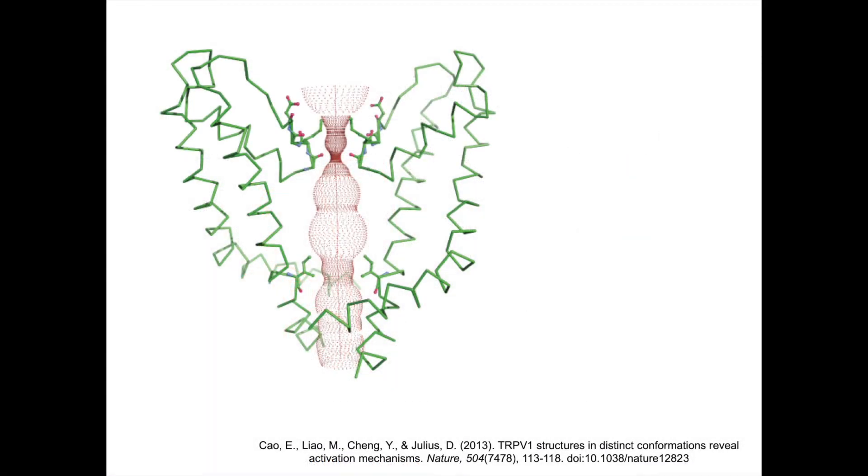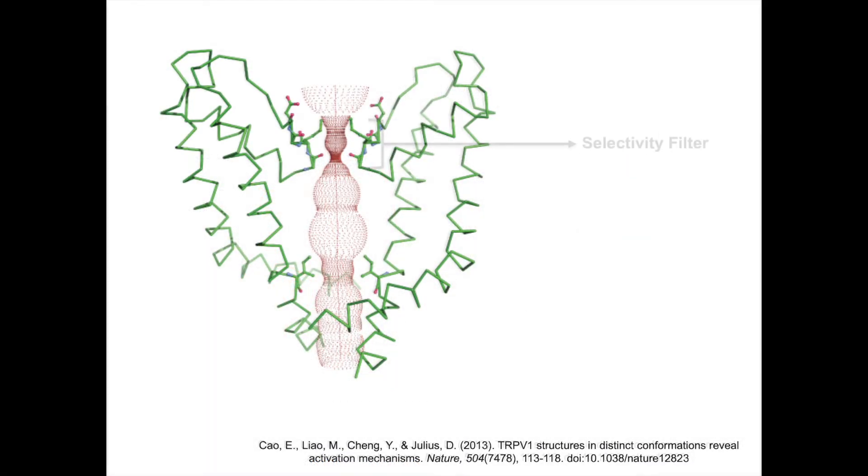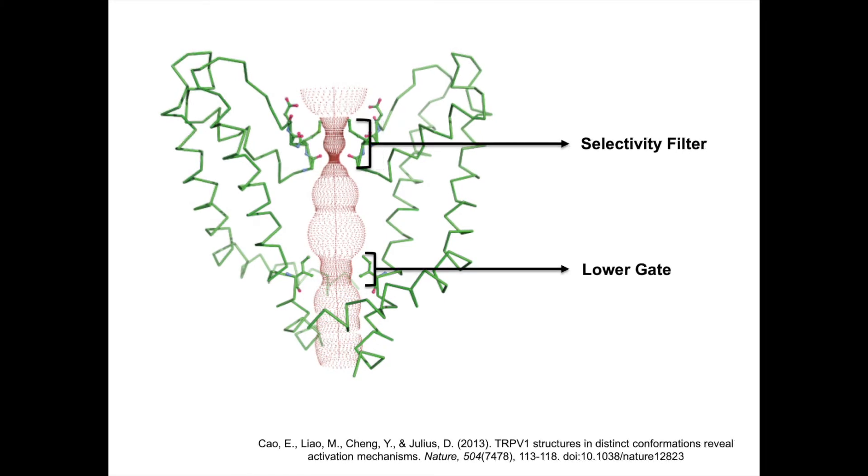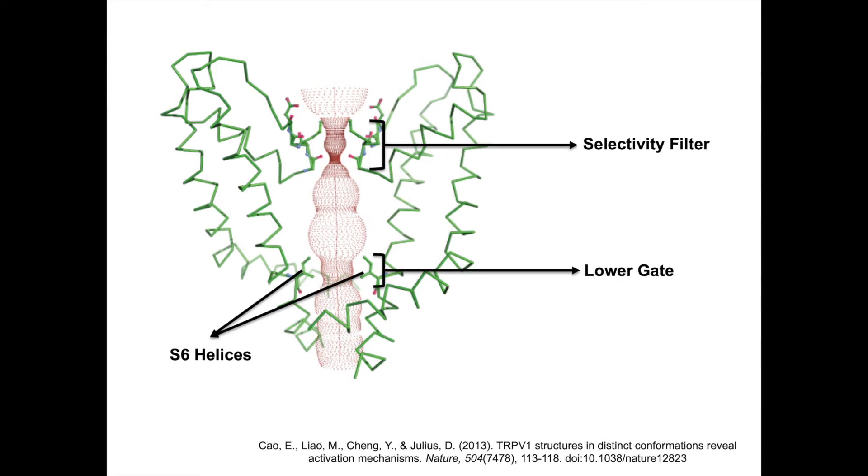The TRPV1 receptor has two gates, an outer pore region known as the selectivity filter and a lower gate. When no capsaicin is present, the receptor is constricted at both the selectivity filter and the lower gate, blocking ion permeation. The lower gate is formed by hydrophobic interactions between S6 helices from each subunit. This gate narrows the width of the lower part of the channel, blocking hydrated ions when the lower gate is closed. In the closed state, the selectivity filter is less than one Angstrom in width, which is too narrow for hydrated ions to permeate.